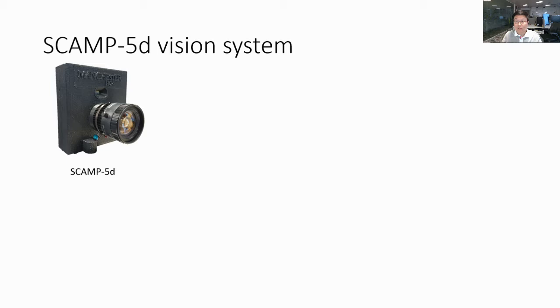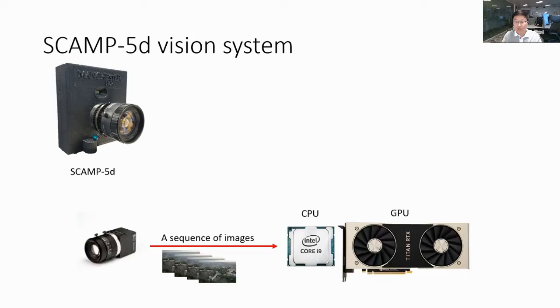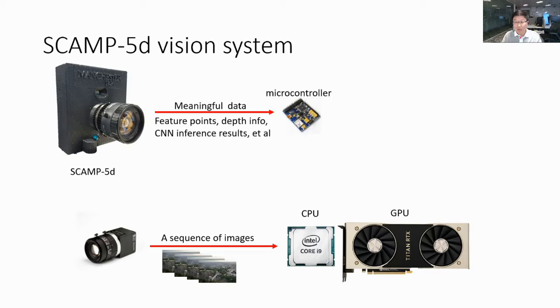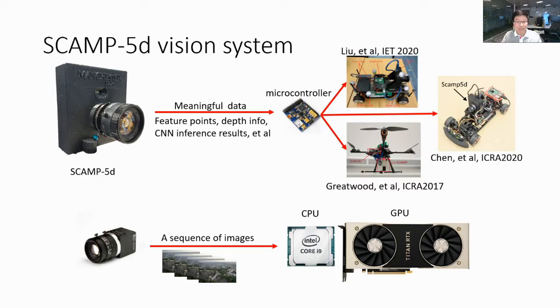In this work, we implement our binary convolutional neural network on the SCAMP-5 vision system. Different from a conventional image sensor, where images are read out and processed externally on CPU or GPU, the SCAMP-5 features onboard parallel processing, outputting computation results such as focal points, depth information, CNN inference results directly to a high-level microcontroller, which is suitable for embedded platforms such as mobile robots.